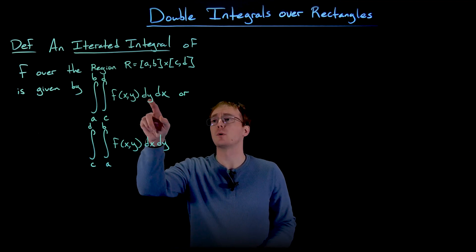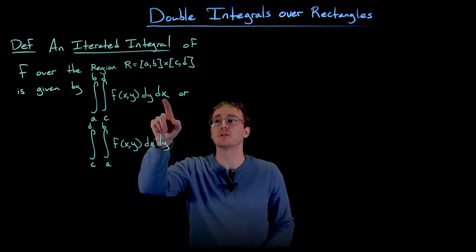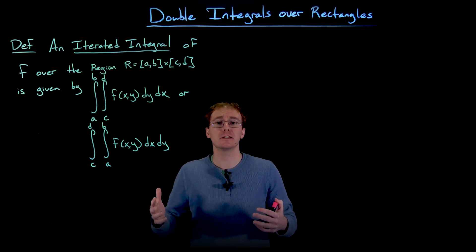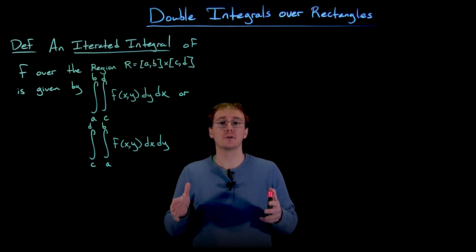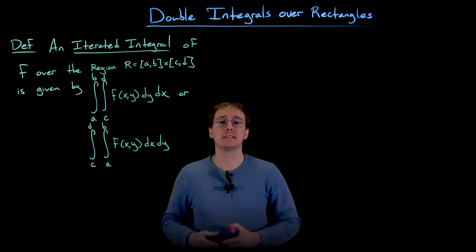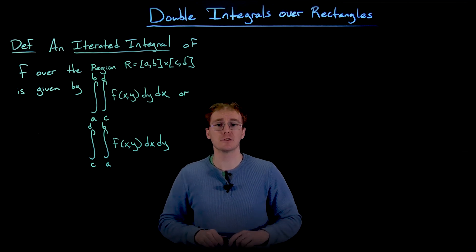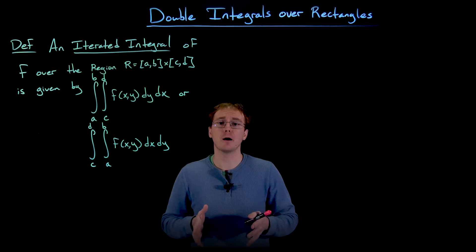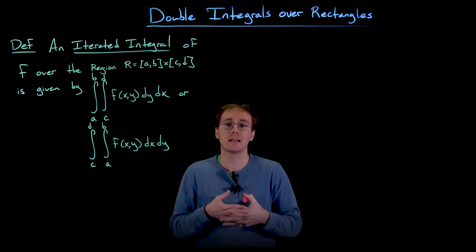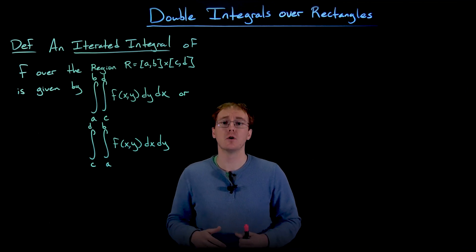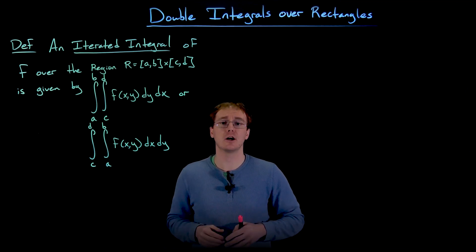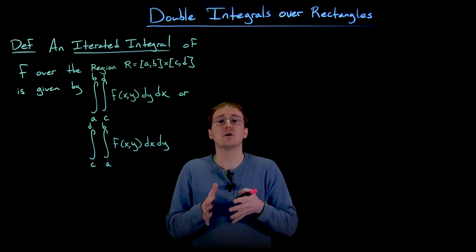In this first iterated integral we're integrating with respect to y first and then with respect to x. Geometrically, we're still slicing our volume up into smaller pieces and adding those back together, but it's a little different. In our first discussion of a double integral we sliced our volume into rectangular prisms. Now with iterated integrals we're taking thin slices, calculating the area of those slices, and adding them back together.